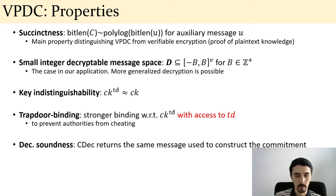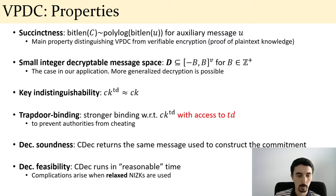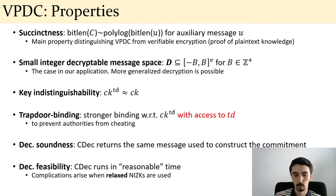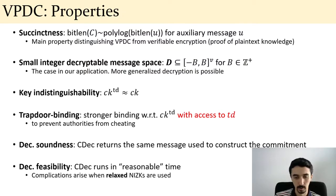We also have a decryption soundness property, which effectively says the decryption function returns the same message used to construct the commitment, and a decryption feasibility property that says the decryption function runs in reasonable time. For relaxed zero-knowledge proofs there are further complications, which we address in the paper.